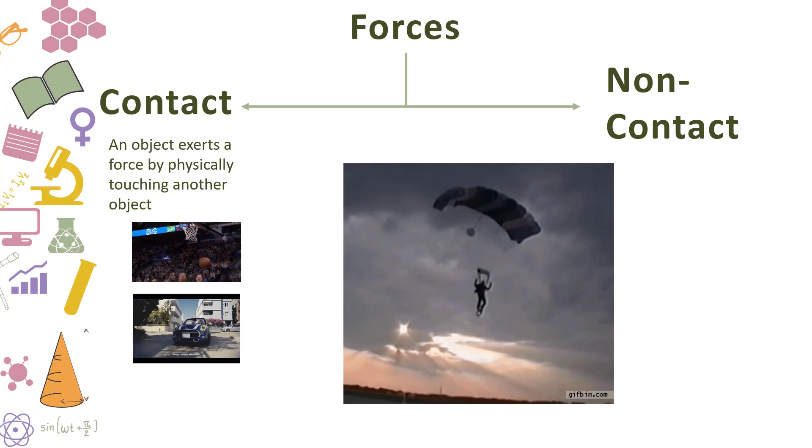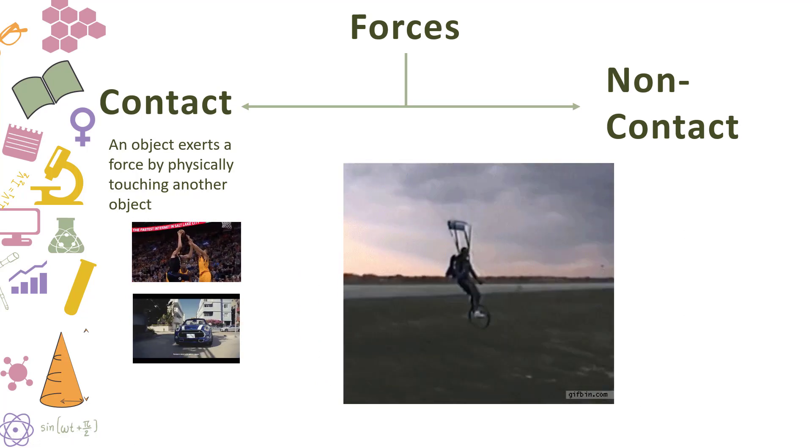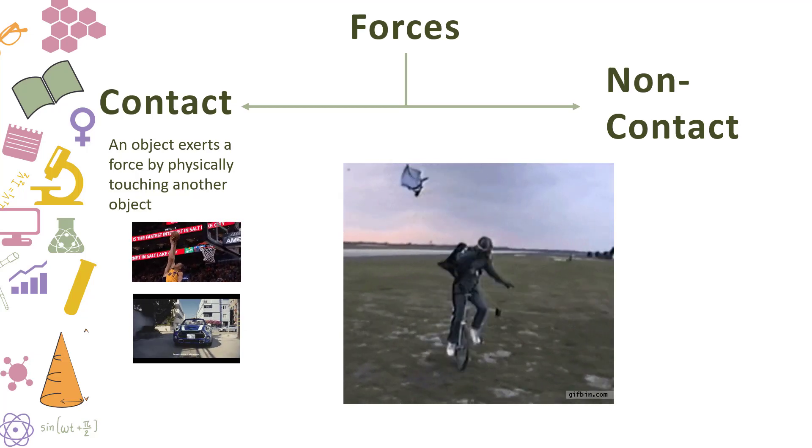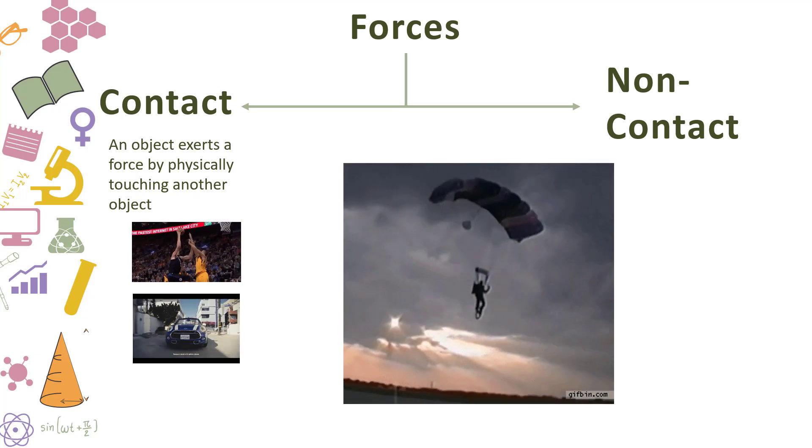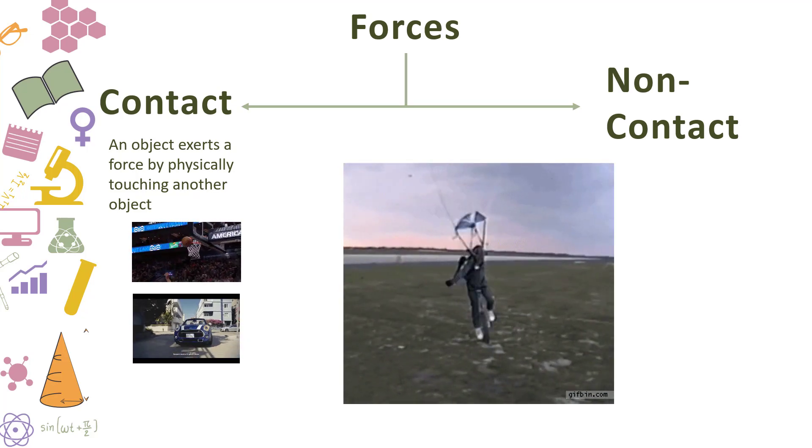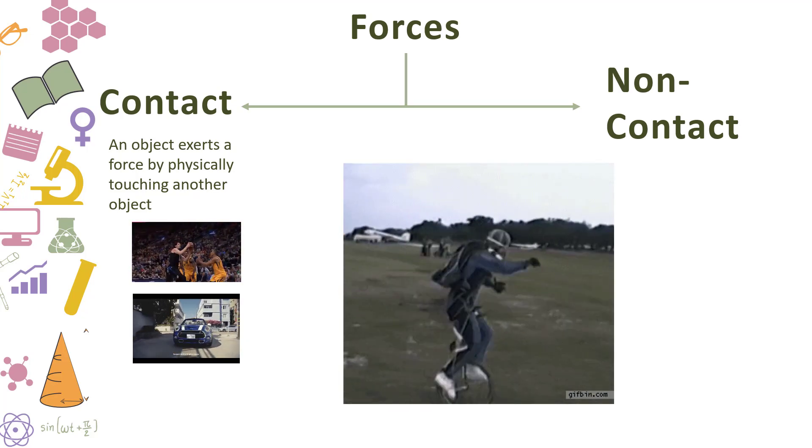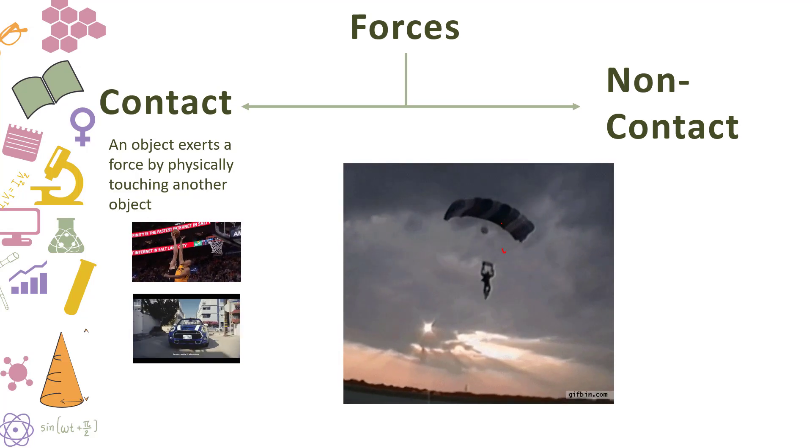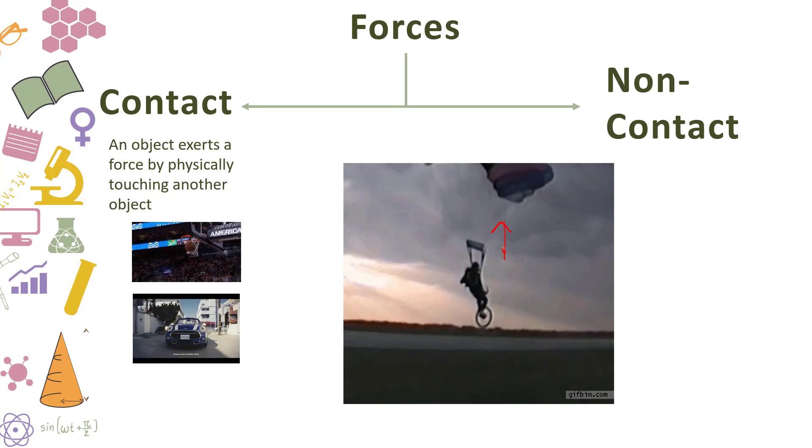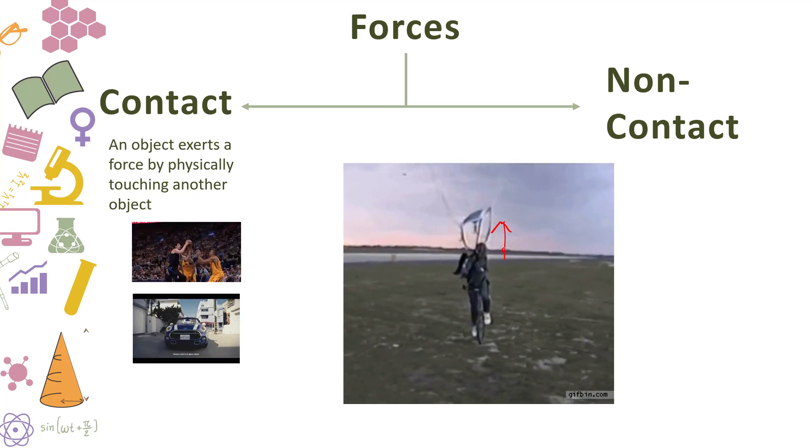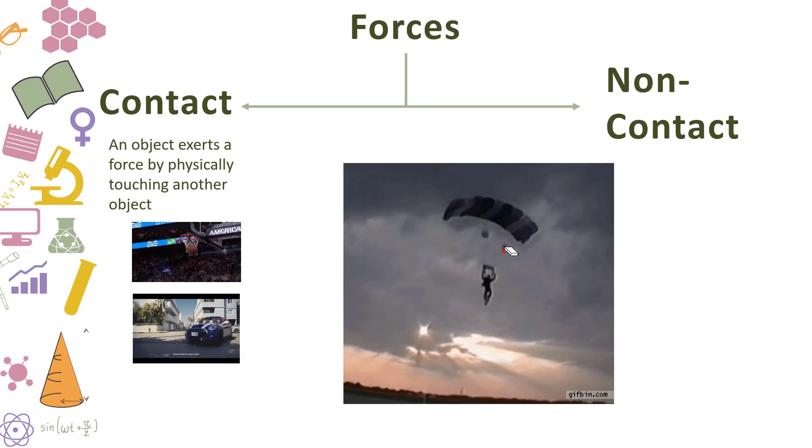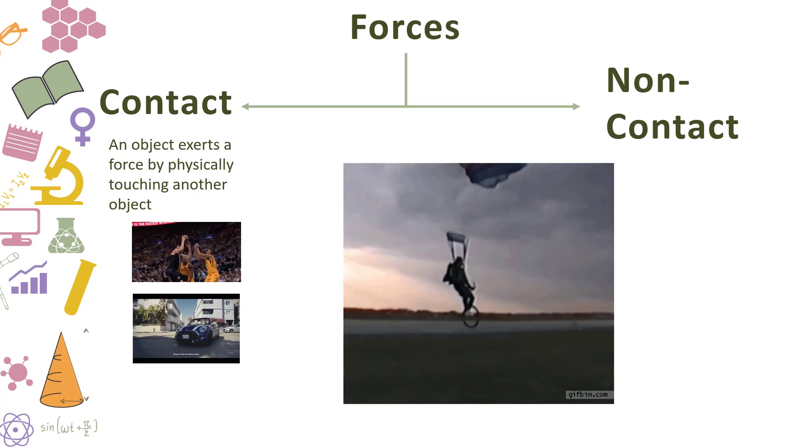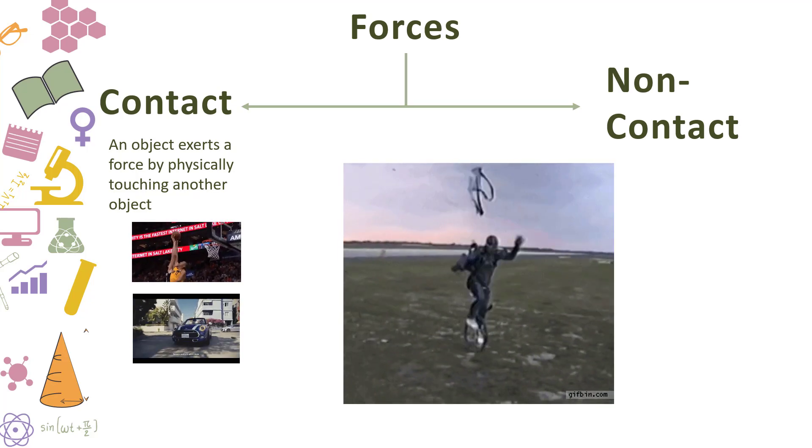Here we have a parachutist who lands in style on a unicycle and pedals away. This is an example of a contact force known as air resistance or drag. So what is happening here is that as he falls, the air is hitting the underside of the parachute and pushing him upwards a little. And what that is doing is it's slowing his descent down towards the ground. So the air particles are pushing up against the underneath of the parachute and slowing him down.